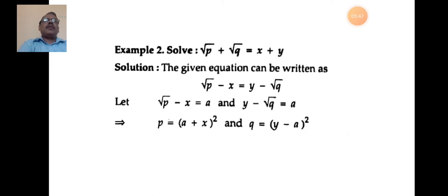Problem 2: Solve √p + √q = x + y. The given equation can be written as √p - x = y - √q. Setting each side equal to a: √p - x = a and y - √q = a.